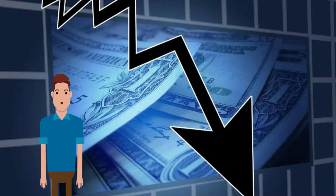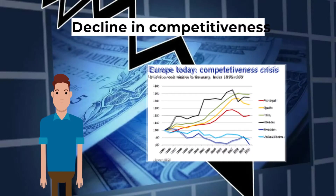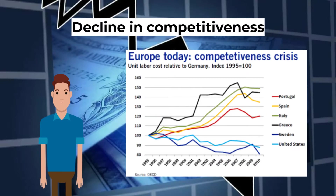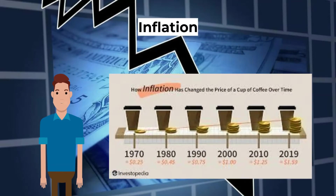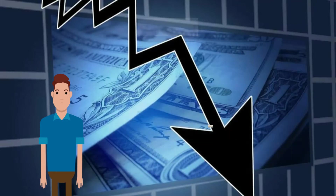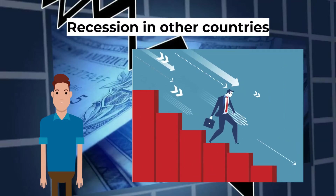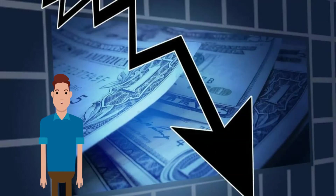If producers cannot meet domestic demand, consumers will have to import goods from abroad, so faster economic growth enables the possibility of a current account deficit developing. Decline in competitiveness: if export industries are in decline and cannot compete with foreign countries, exports fall, ushering in a deficit. Inflation makes exports less competitive and imports more competitive, and is a major reason many countries today experience current account deficits.